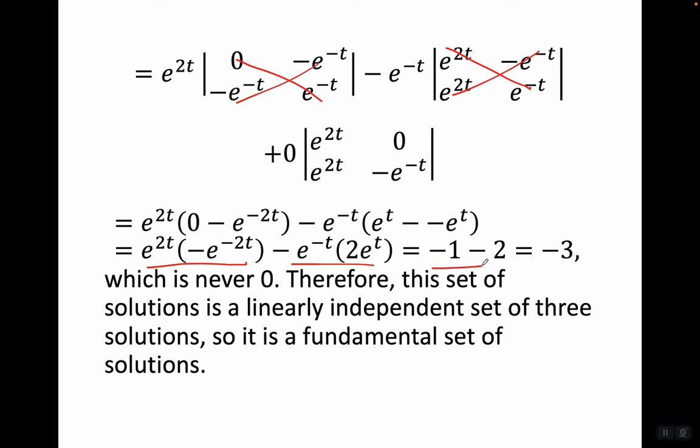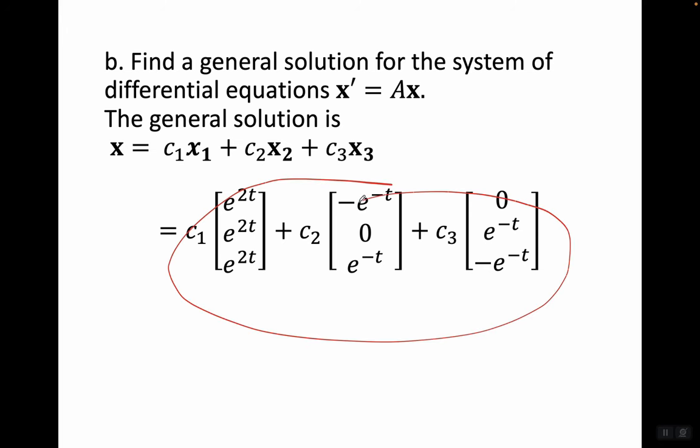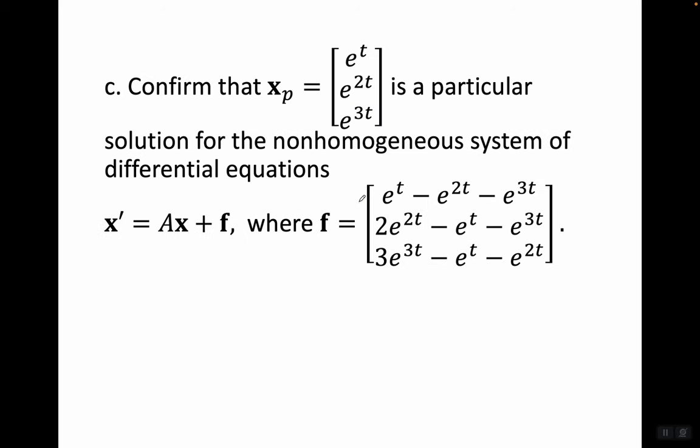The Wronskian equals -3, which is never zero. Therefore this set of solutions is a linearly independent set of three solutions, so it is a fundamental set of solutions. The general solution is x = c1·x1 + c2·x2 + c3·x3.